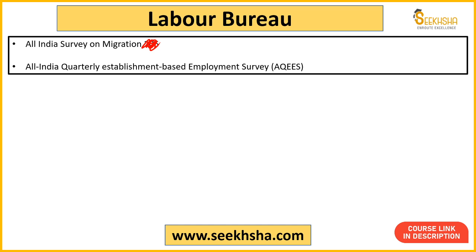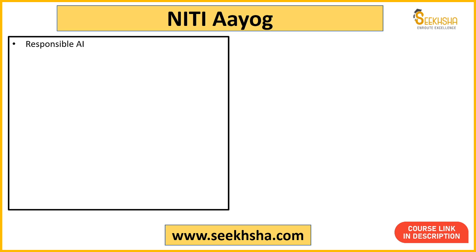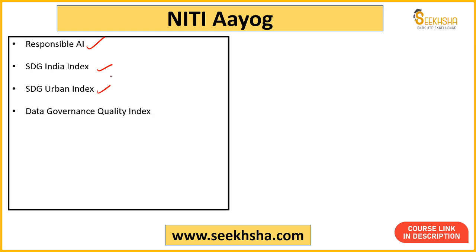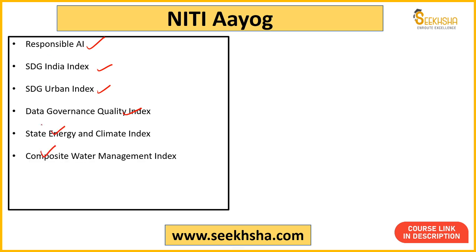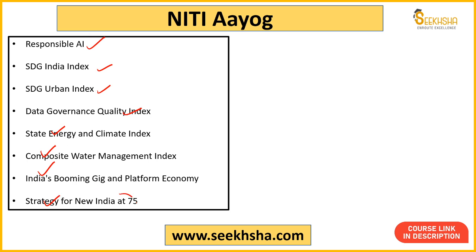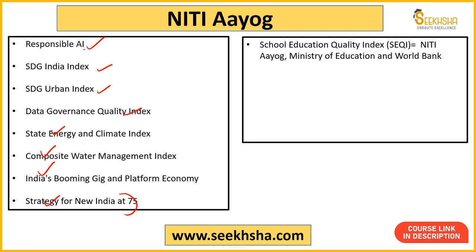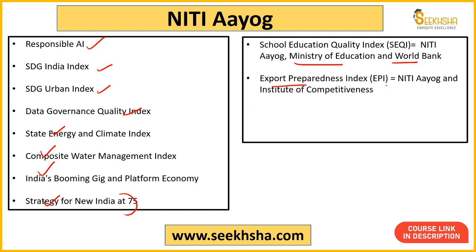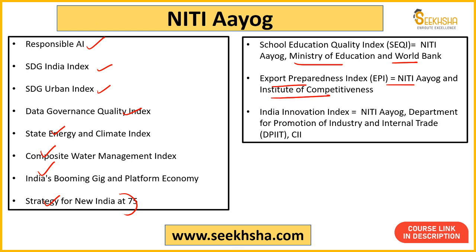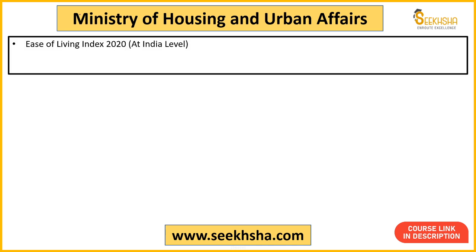NITI Aayog reports — some of these are not annual reports but were released one time, yet they are important because they get asked. These include: Responsible AI, SDG India Index, SDG Urban Index, Data Governance Quality Index, Share Energy and Climate Index, Composite Water Management Index, India Booming Gig and Platform Economy, and Strategy for New India at 75. Strategy for New India at 75 has been asked once by UPSC.